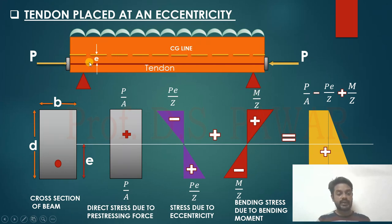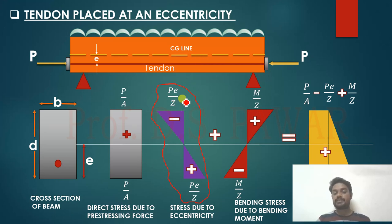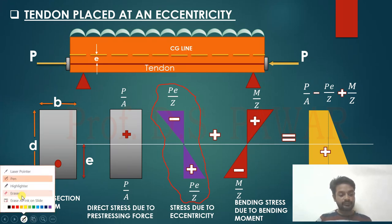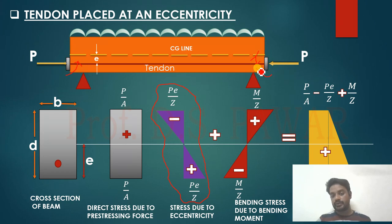Compared to when the tendon is at the central axis, when the tendon is provided with some eccentricity, a new type of stress develops: stresses due to eccentricity. These are also bending stresses. When the prestressing force P is applied at an eccentricity e from the centroidal axis, it creates a moment equal to P×e. This moment acts on the beam and causes bending.